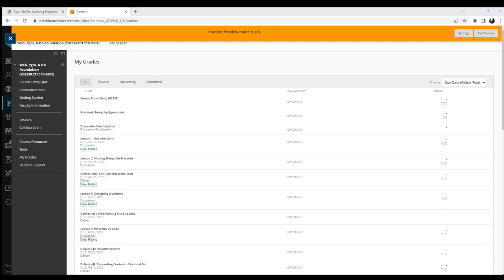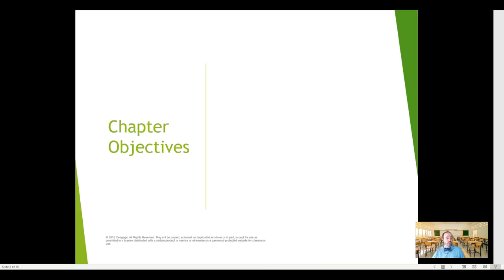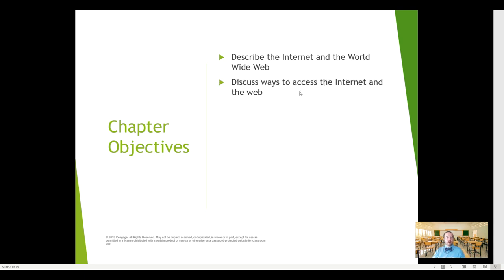As for our PowerPoint, we're talking about lesson one: the environment and the tools — what do we mean by the internet, and what's the difference between the internet and the web? Our objectives for this chapter are to describe what the internet is, what the web is, and to use technical terms to explain the difference. We'll talk about ways to access the internet and the web, and I've included some basic computer knowledge that you must know on these slides.